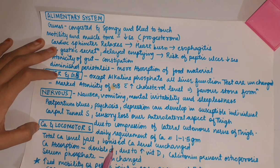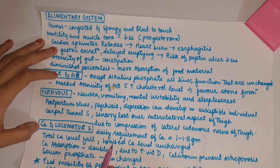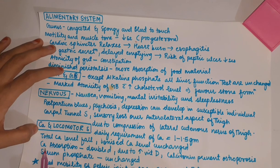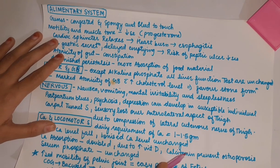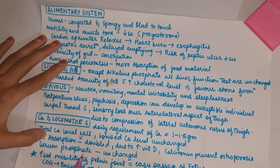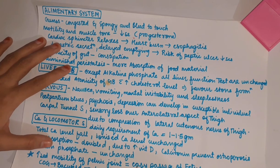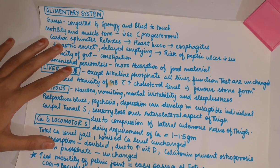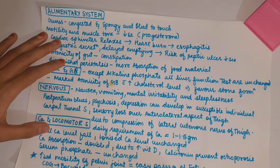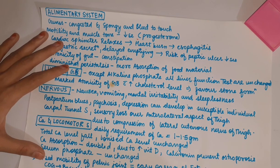Calcium and locomotor system: daily requirement of calcium is 1 to 1.5 grams. Total calcium level falls but ionized calcium level is unchanged. Calcium absorption is doubled due to increased vitamin D. Calcitonin prevents osteoporosis. Serum phosphate level is unchanged. There is increased mobility of the pelvic joints for easy passage of the fetus. The center of gravity shifts backward, leading to lumbar lordosis. In pregnant women, there occurs a waddling gait.